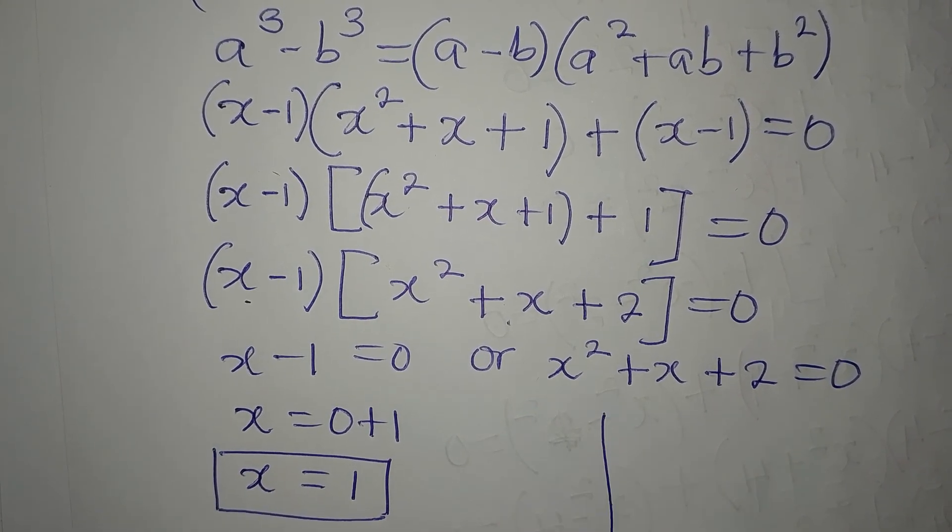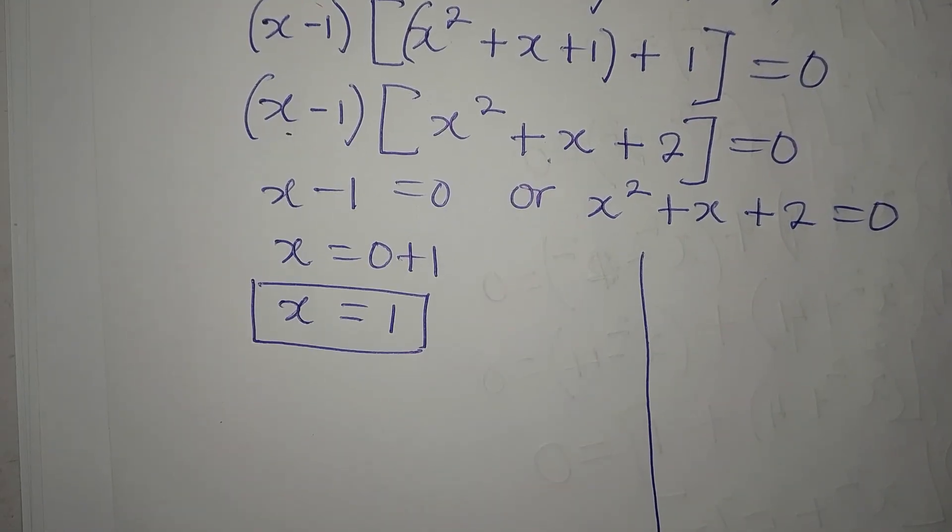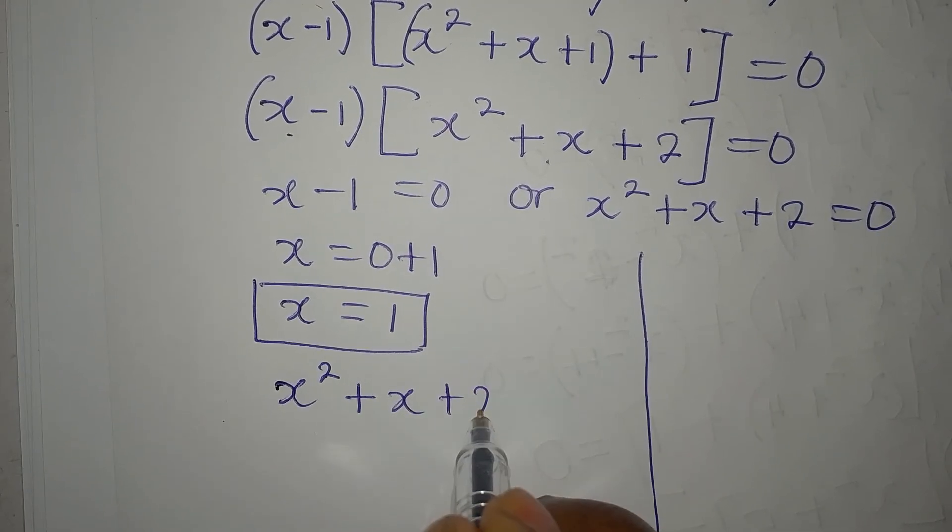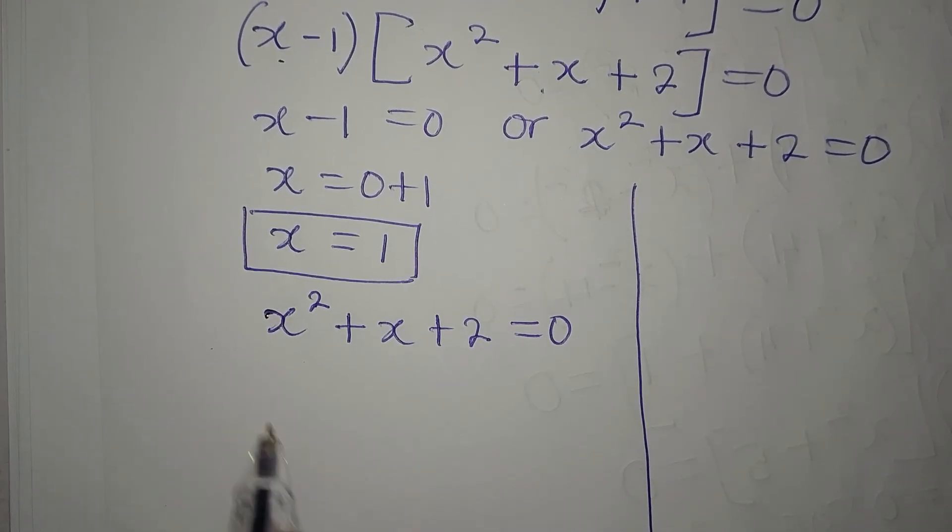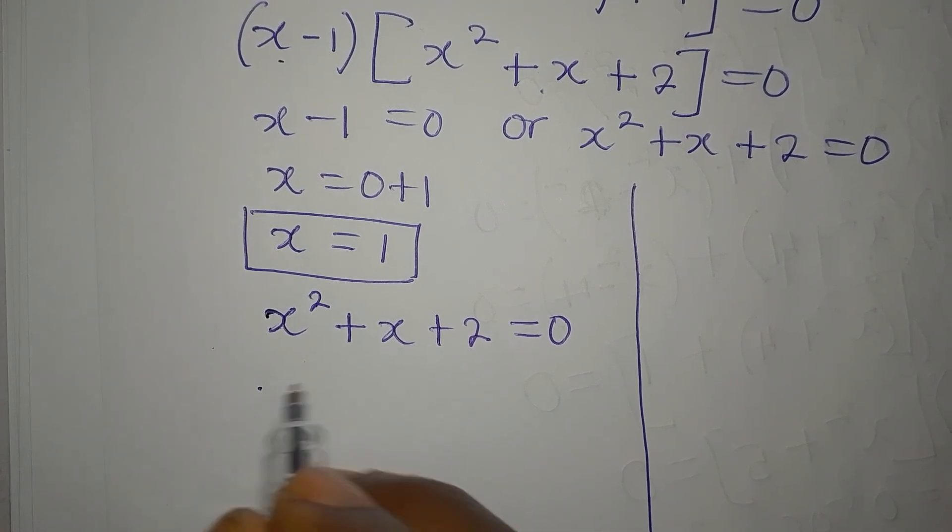Now, we are going to get more solutions from here. x squared plus x plus 2 equals 0. Let's use the formula for it. This is a quadratic equation.